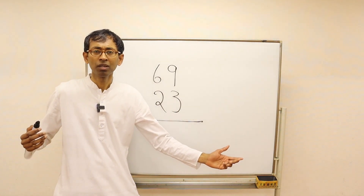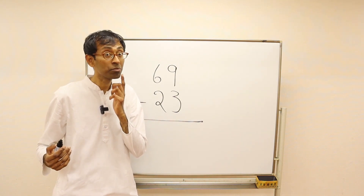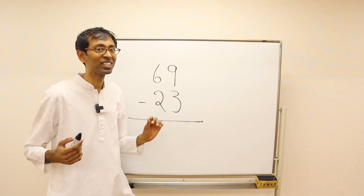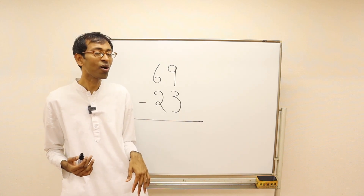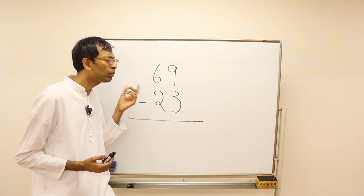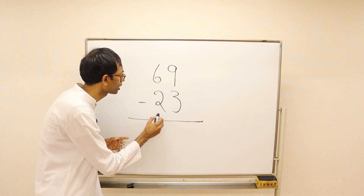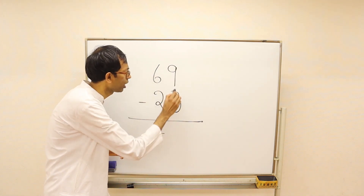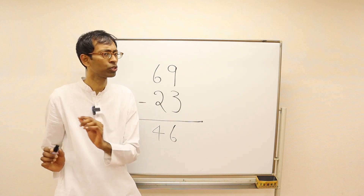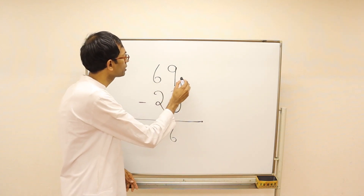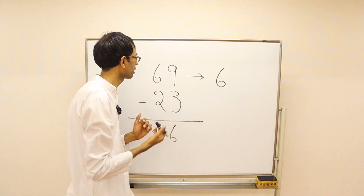Before we attempt big subtraction problems, we will do something interesting. Do you remember digit sums? We can use a digit sum check to confirm if a subtraction answer is right or wrong. Suppose we have 69 minus 23 — the answer is 46. The digit sum of 69 is 6, because nines don't count in digit sums.